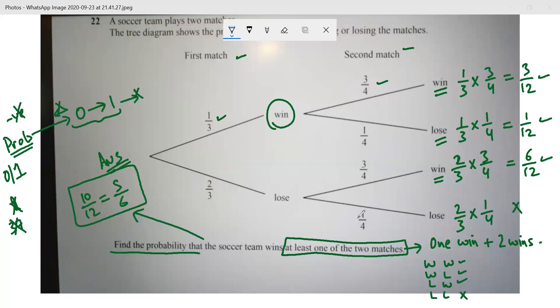So to find the probability that the soccer team wins at least one of the matches, these are the three probabilities that I need to consider. And when I take a summation of these three, my answer would be 10/12, which I can reduce to 5/6. So 5/6 is my final answer.